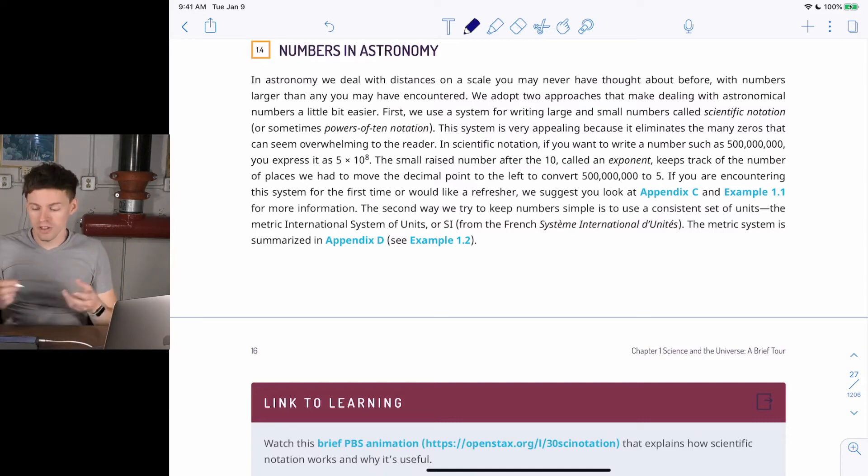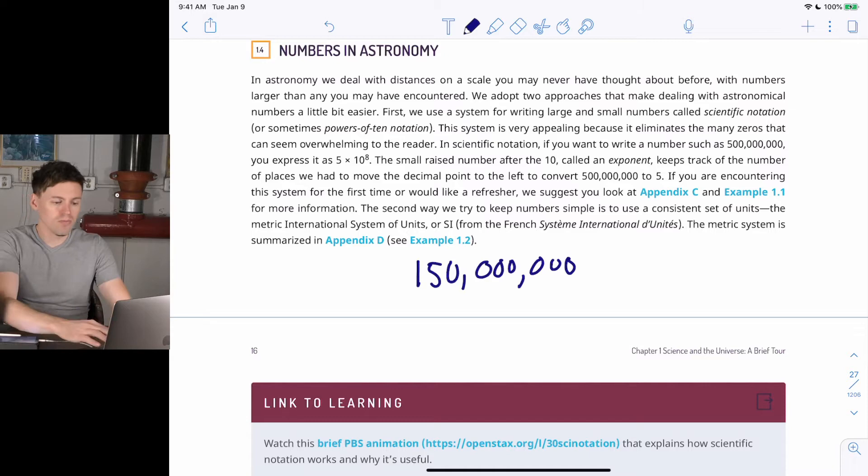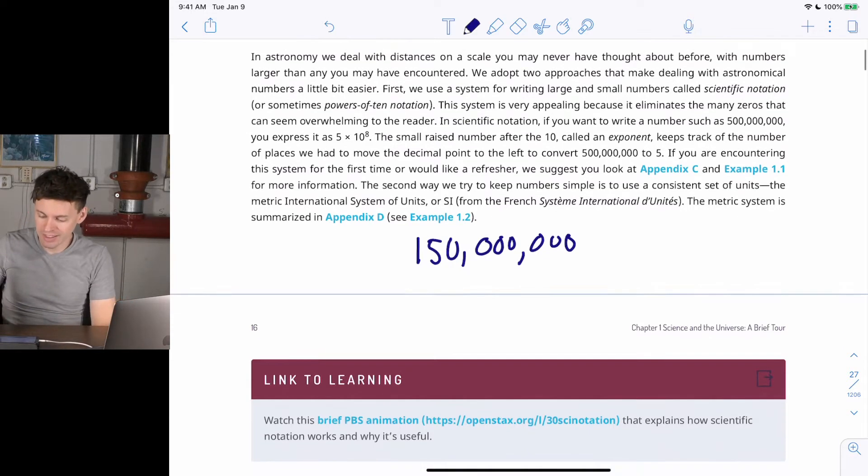So in astronomy, the Sun is 93 million miles away from the Earth or 150 million kilometers. It's really far away, and I don't want to write 150 million all the time. So we come up with a shorthand to make this easier, and it's the scientific notation. And it makes it sound like it's fancy, but all it means is we're too lazy to write these numbers a lot. So let's call it scientific notation.